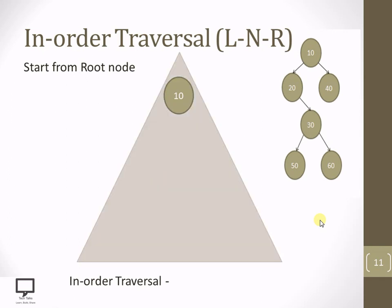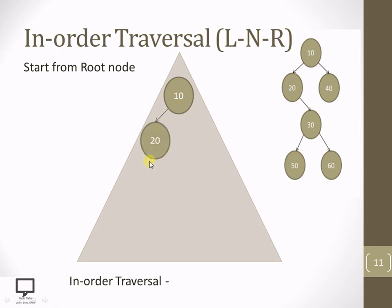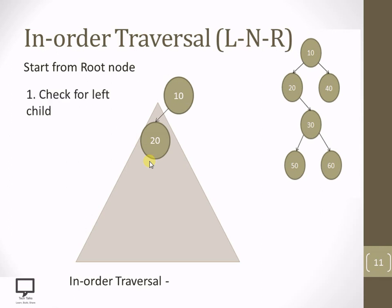After that, this is the root node. My first step is to check the left child if it is present or not. Now let's check in this tree whether 10 as the root node is having its left child or not. Yes, it is present. So we need to step down to the left child. Here I am moving to the left child and now making 20 as the root node. After making 20 as the root node, again let's check for the left child.